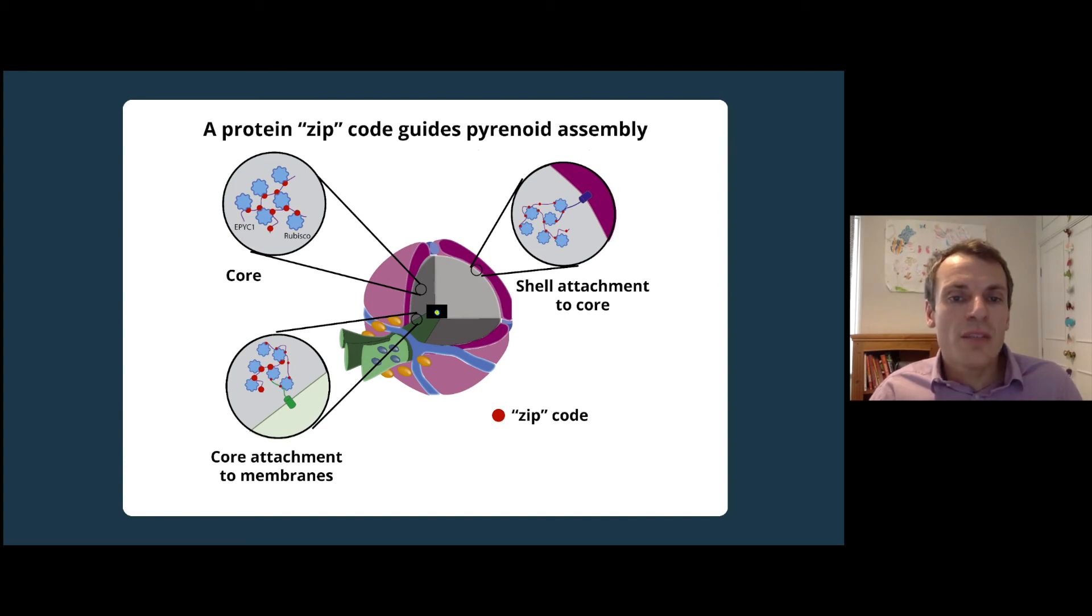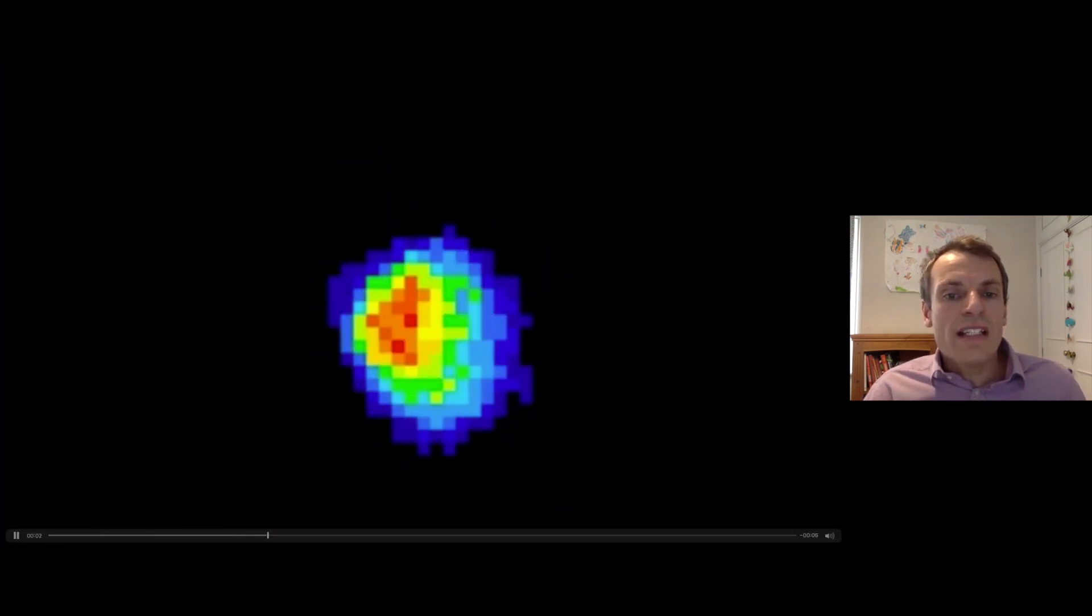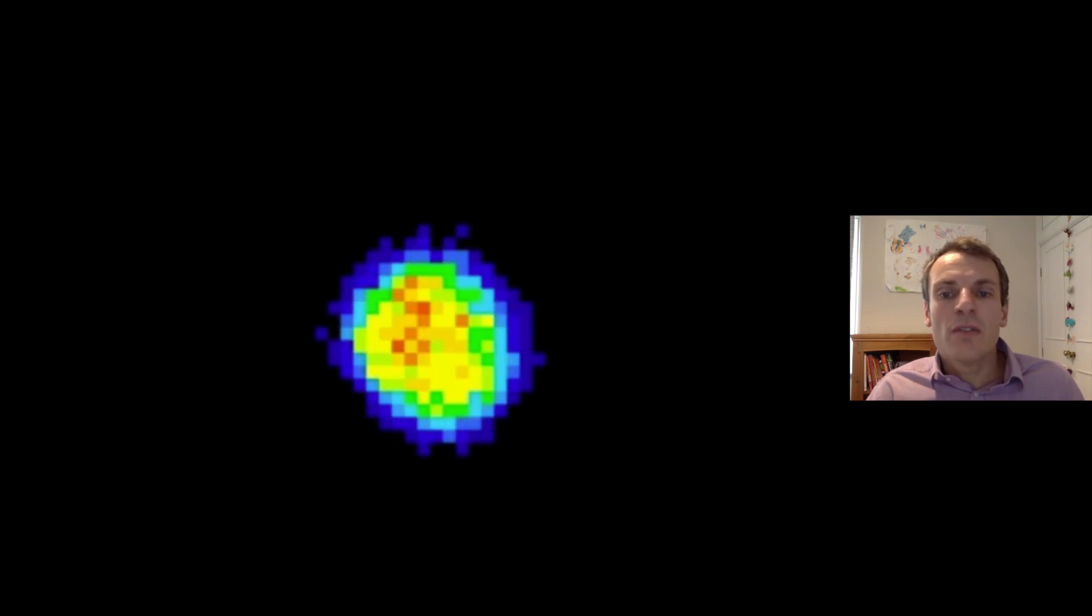To do this, we turned off the fluorescent label for half of rubisco enzymes in the pyrenoid core and then watched what happened. What we see is that the still fluorescent rubisco in the pyrenoid rapidly moves into the region where the turned-off rubisco was, thus showing that the pyrenoid is highly dynamic.